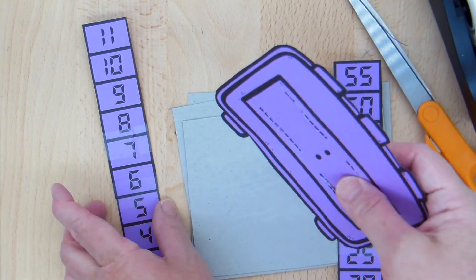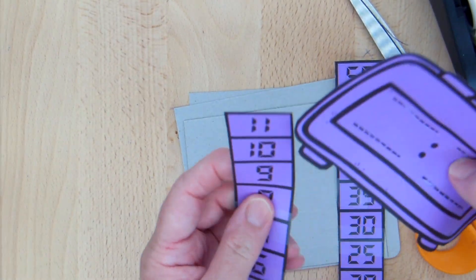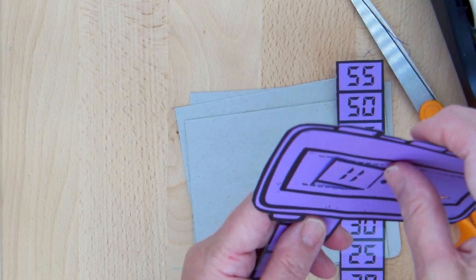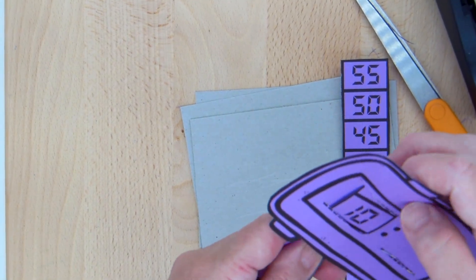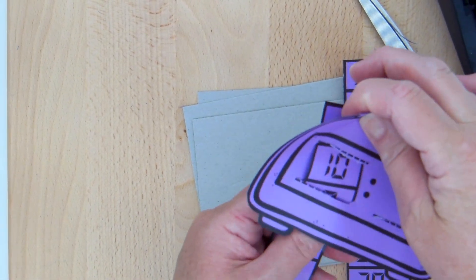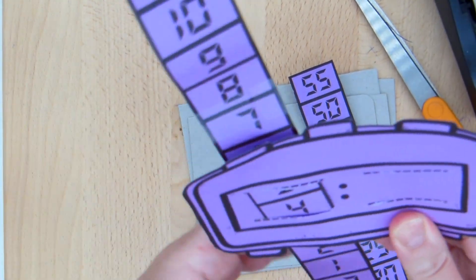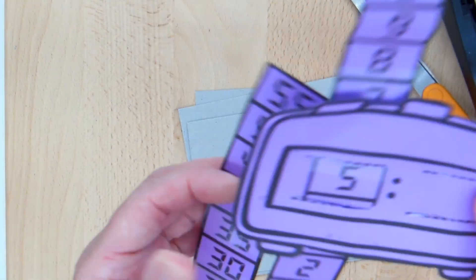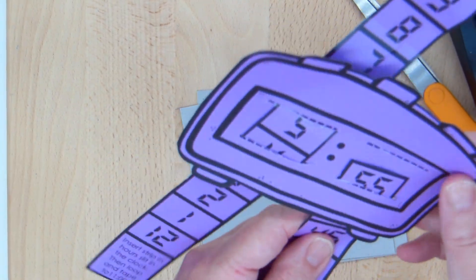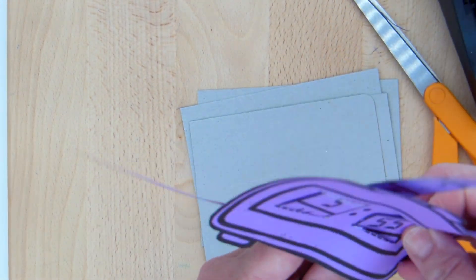Now I'm going to start with my hours and I'm going to slide it through the bottom slit and then through the top slit. So it looks like that. And I'm going to do the same thing for my minutes, going through the bottom and then through the top slit.